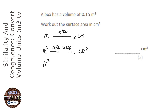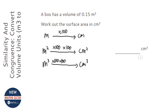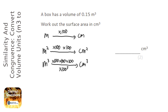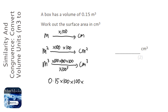In this question we are getting from metres cubed to centimetres cubed. So we have a times by 100 per dimension, and cubed is three dimensions, so we are going to times by 100, times by 100, times by 100 — or times by 100 cubed. So we are going to do 0.15 times by 100, times by 100, times by 100.